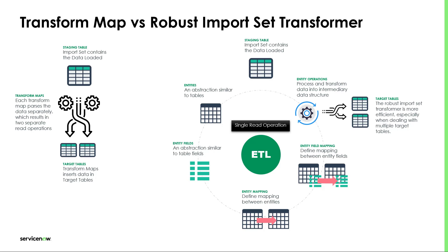We also have the option to have more than one transfer map and more than one target table. Just remember that each transfer map parses the data separately, which results in two separate read operations.